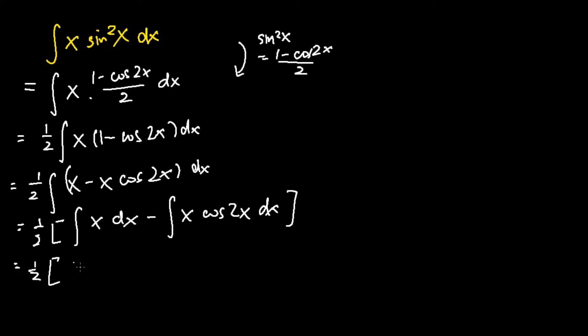So the integration of x dx is just x squared over 2. Whereas for the integration of x cosine 2x, we have 1 quarter 2x sine 2x plus cosine 2x plus c.